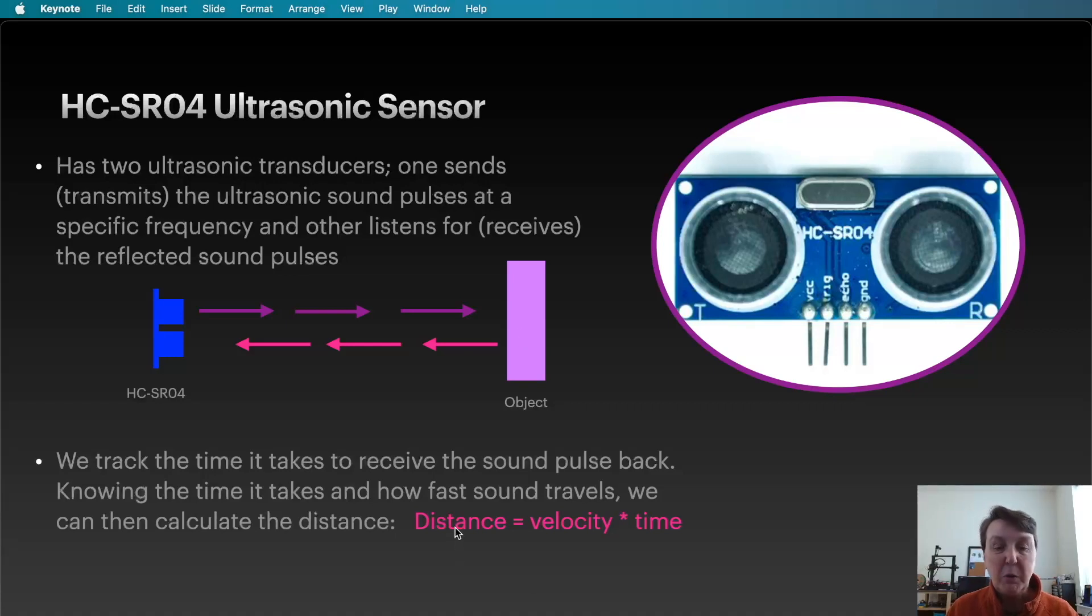We use the equation distance equals velocity times time. We're using sound so we know the speed of sound and then we'll be able to use this sensor to calculate the time it took for the sound to go out, bounce off the object, and come back. So we have everything we need to calculate the distance.